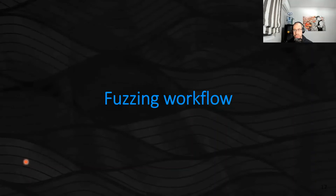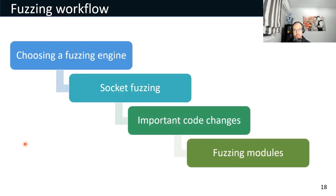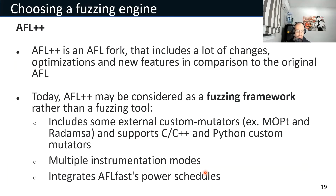Now I'm going to explain the most relevant aspects of my fuzzing workflow. I have divided it into four parts: choosing a fuzzing engine, socket fuzzing, important code changes, and fuzzing modules. When it comes to the fuzzing engine, I have no doubt — AFL is my choice, and more specifically AFL++, which is a fork of AFL that includes many new features such as custom mutators, power schedules, and multiple instrumentation modes.